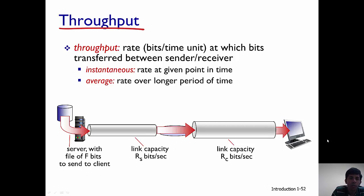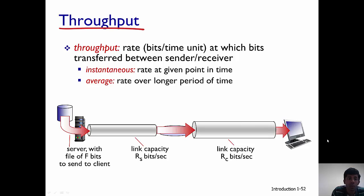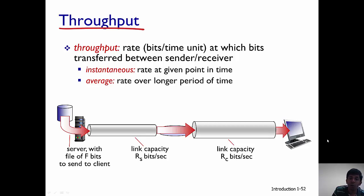Hi everyone. In this video we are going to talk about throughput. Throughput is the rate at which bits are transferred from the sender to the receiver, and its unit is bits per unit time. There are two concepts here: instantaneous throughput, which is the rate at any given point in time and can vary over time, and average throughput, which is the rate over long periods of time.